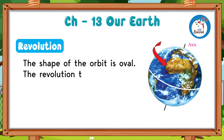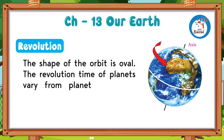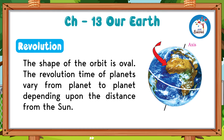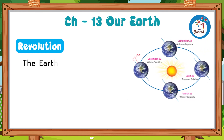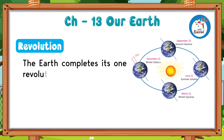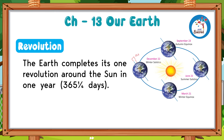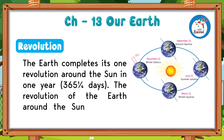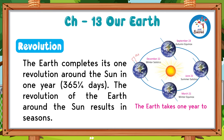The revolution time of planets varies from planet to planet depending upon the distance from the Sun. The Earth spins from west to east on its axis. The Earth completes one revolution around the Sun in one year — 365 and one-fourth days. The revolution of the Earth around the Sun results in seasons.